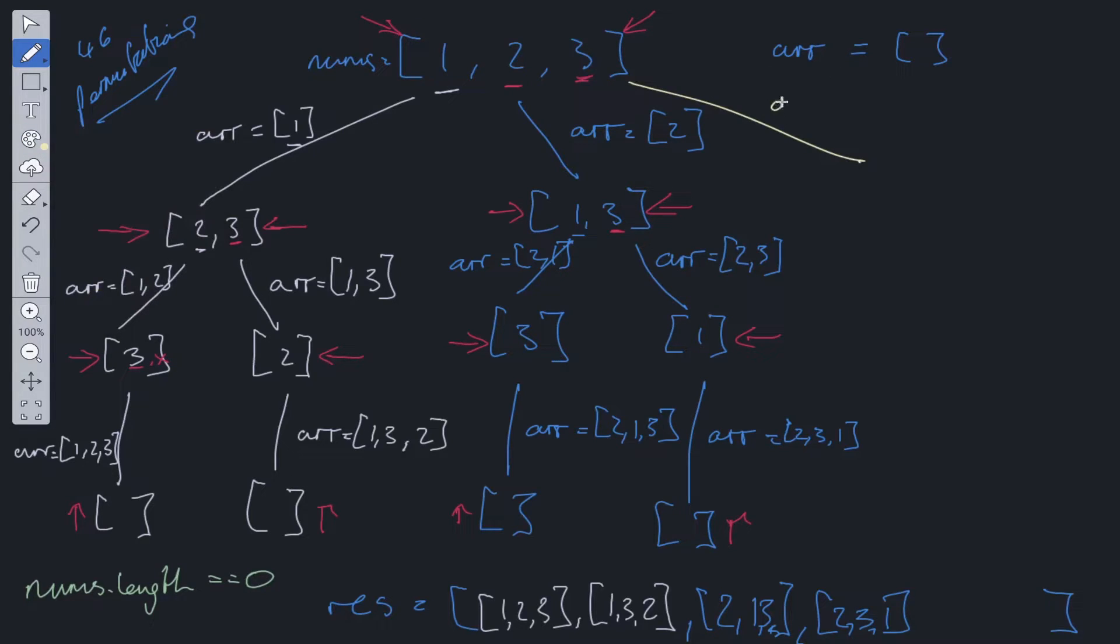So if we take three and pass it into the array, we're left with one, two. We take one. The array is equal to three, one. Running out of space.